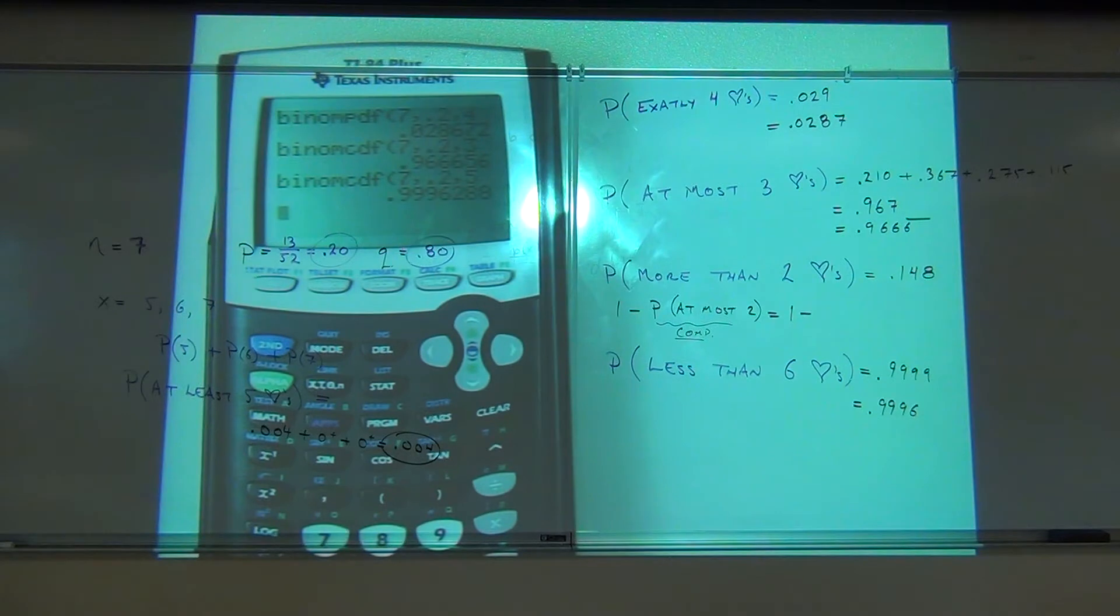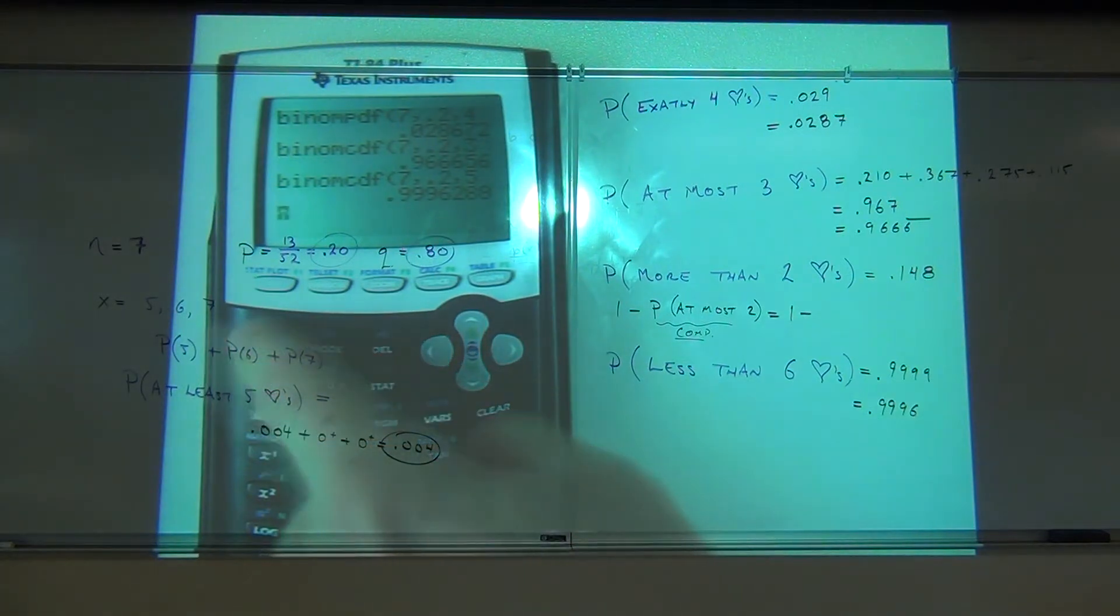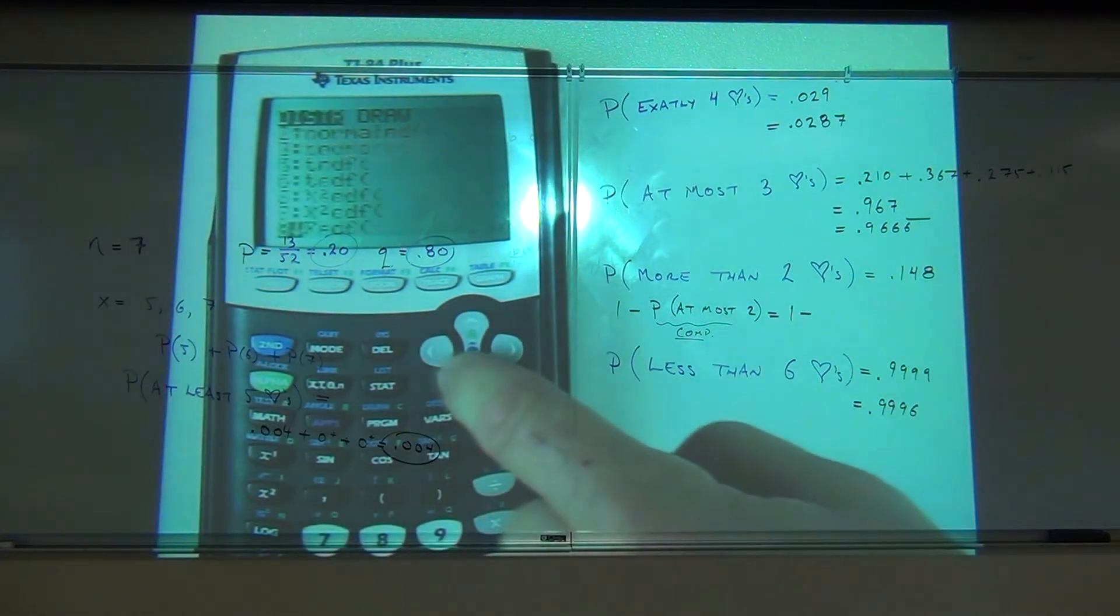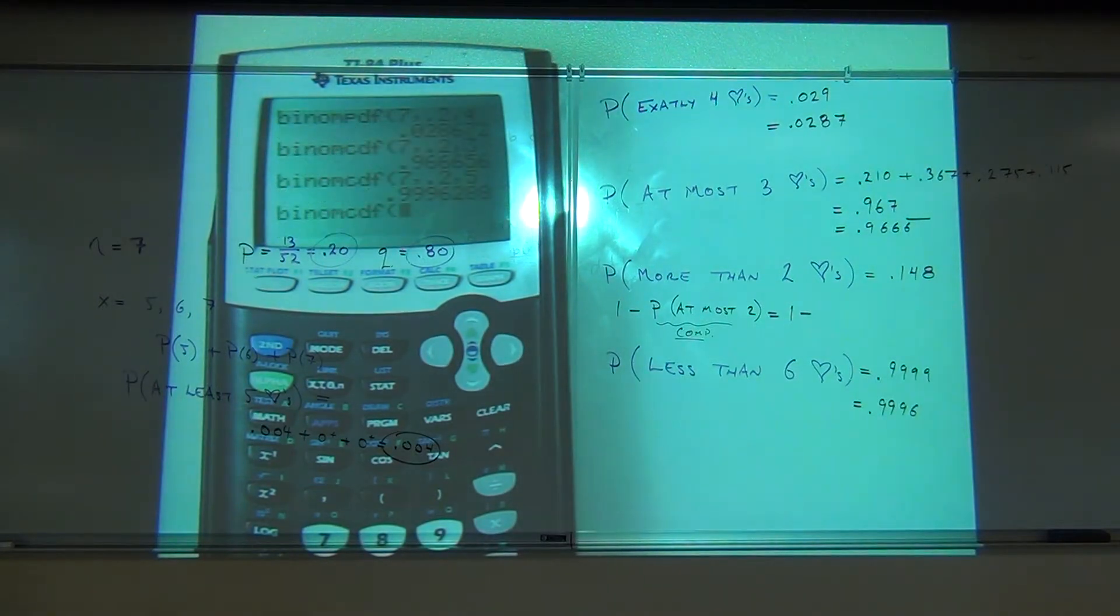Subtract that from our one. We'll go to our distribution button, we'll go down to cumulative again. We'll plug in the seven, we'll plug in the point two, and what's the next number we're going to plug in?